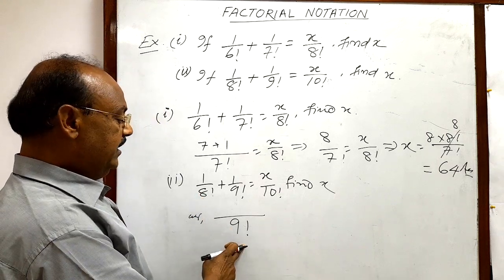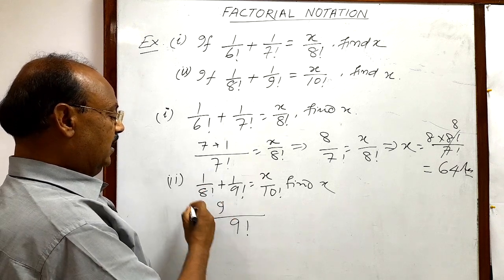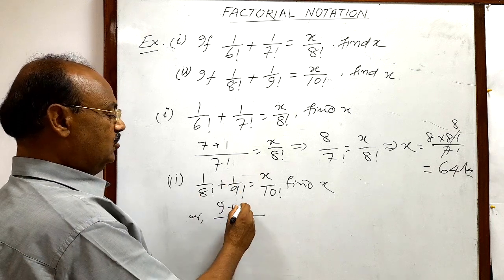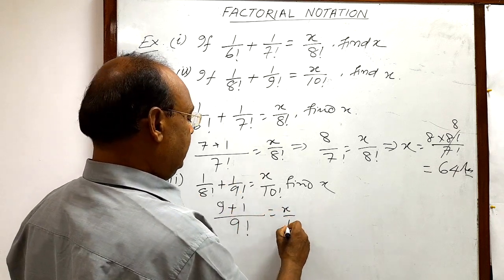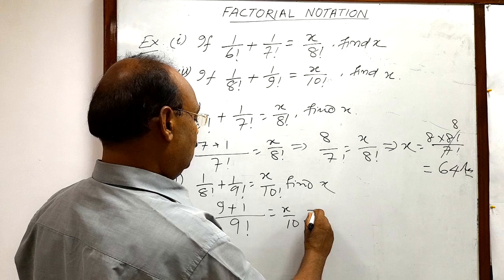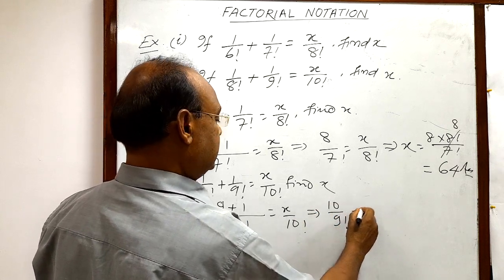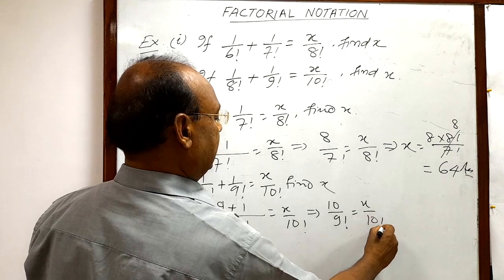8 factorial will get 9 and 9 into 1 is 9. And here 9 factorial divided by 9 factorial 1 time and 1 into 1 is 1. This is equal to x by 10 factorial. So we are getting here 10 by 9 factorial is equal to x by 10 factorial, correct.